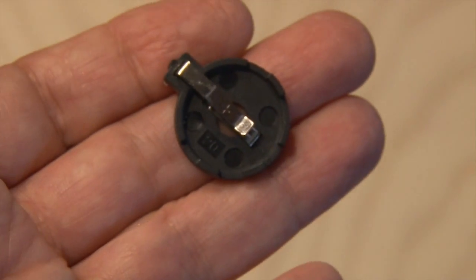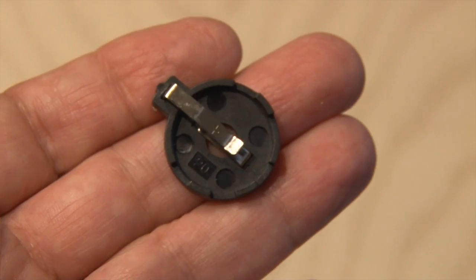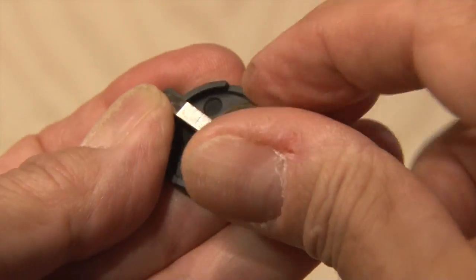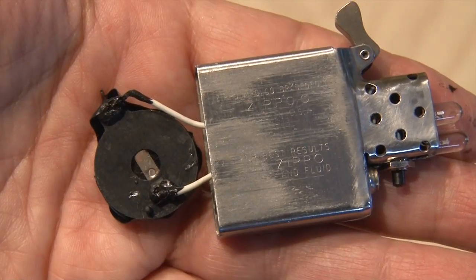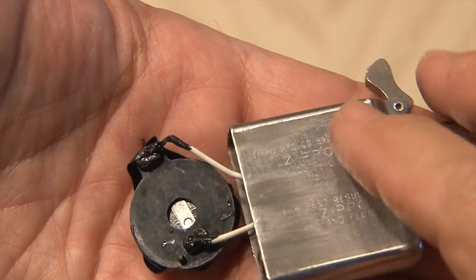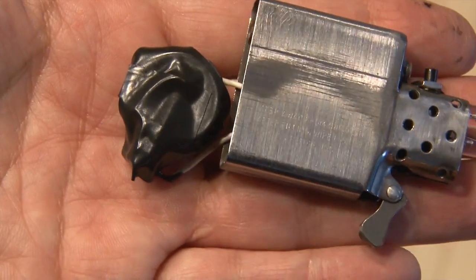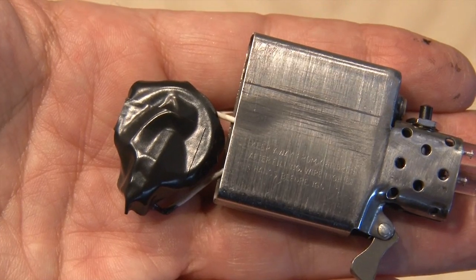Our power source is going to be one large button cell battery. And we're going to use a button cell battery holder to wire it together. After adding liquid electrical tape to those contacts. And then also I added some electrical tape to the battery side. So no contacts would be made with the case.